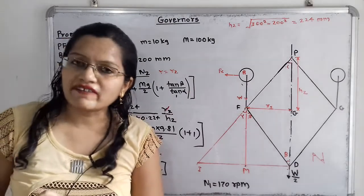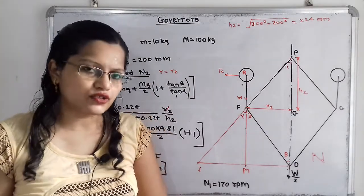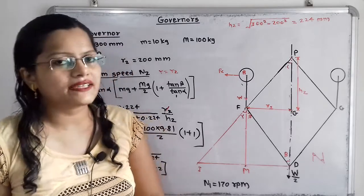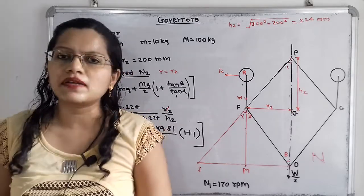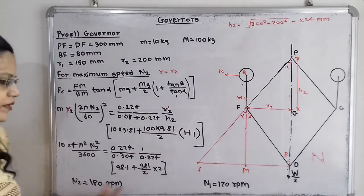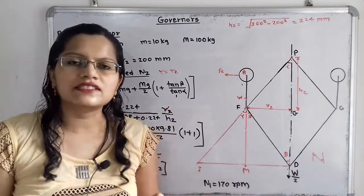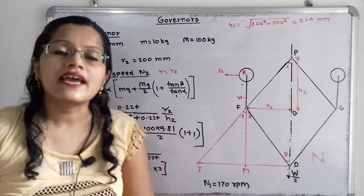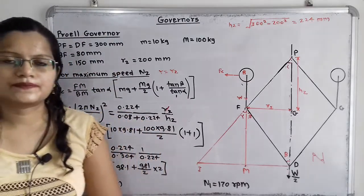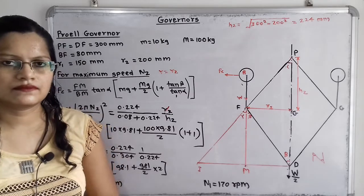The range of speed is the difference between maximum and minimum speed: Range = N2 − N1 = 180 − 170 = 10 rpm. Thank you.